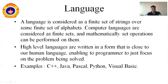Now we are talking about language. The language is always a set of strings. Once we have alphabets, then we have strings, and now we have language. Language is considered as a finite set of strings over some finite set of alphabets. Computer languages are considered as finite sets, and mathematically set operations can be performed on them. For example, we can have a language of all strings starting with A — words like apple, annotation, area — all words starting with alphabet A. The set of these words will form a language.